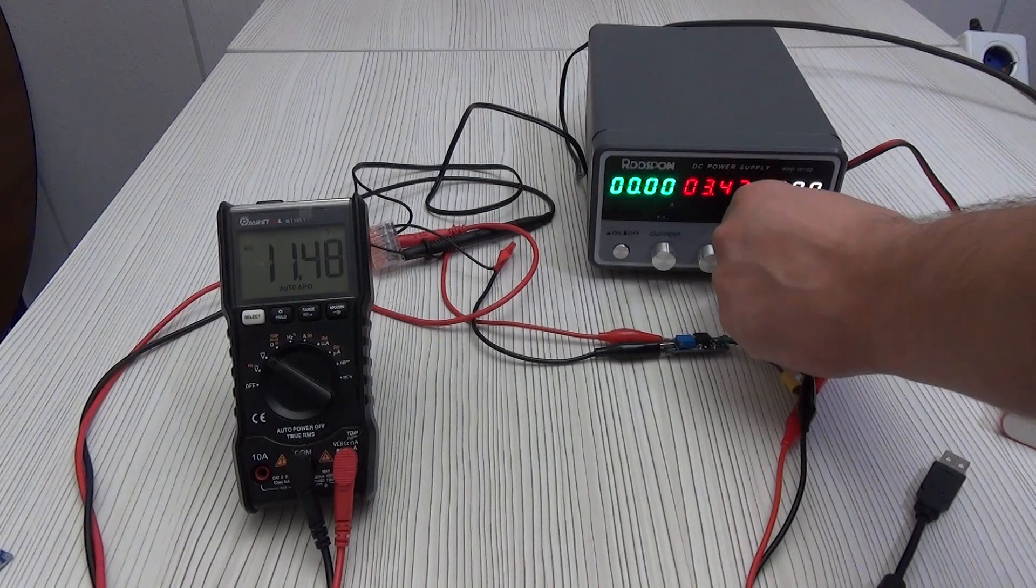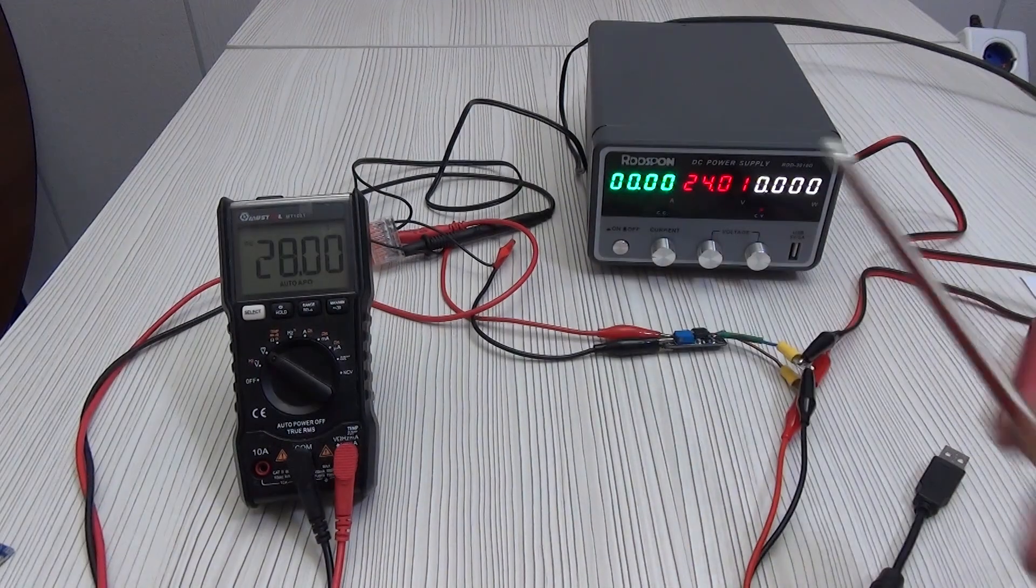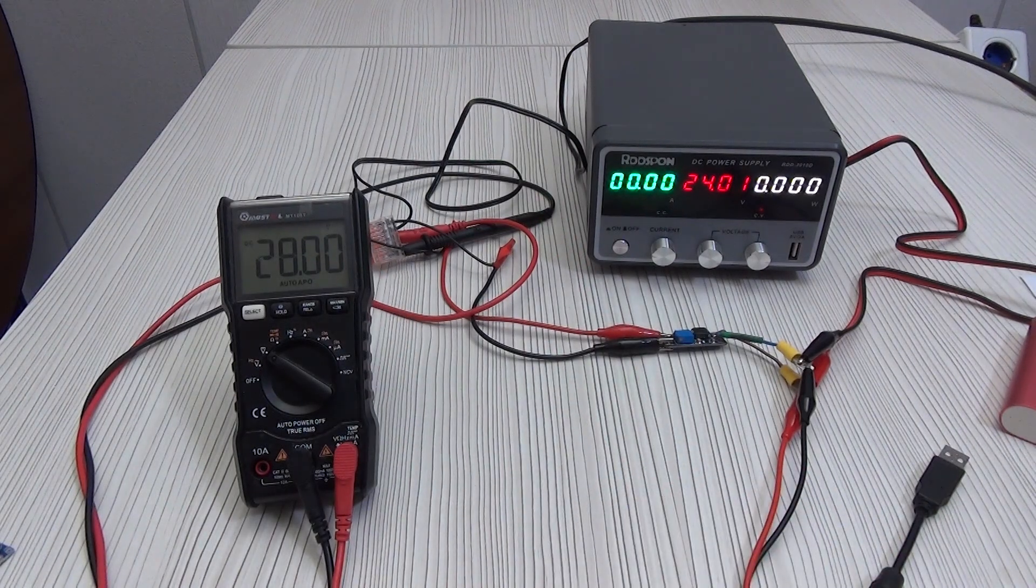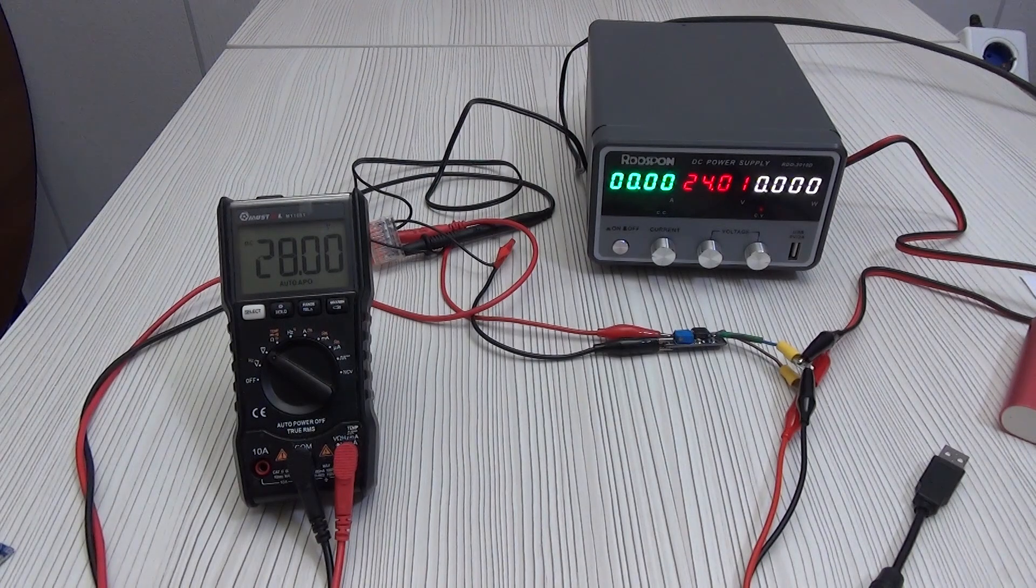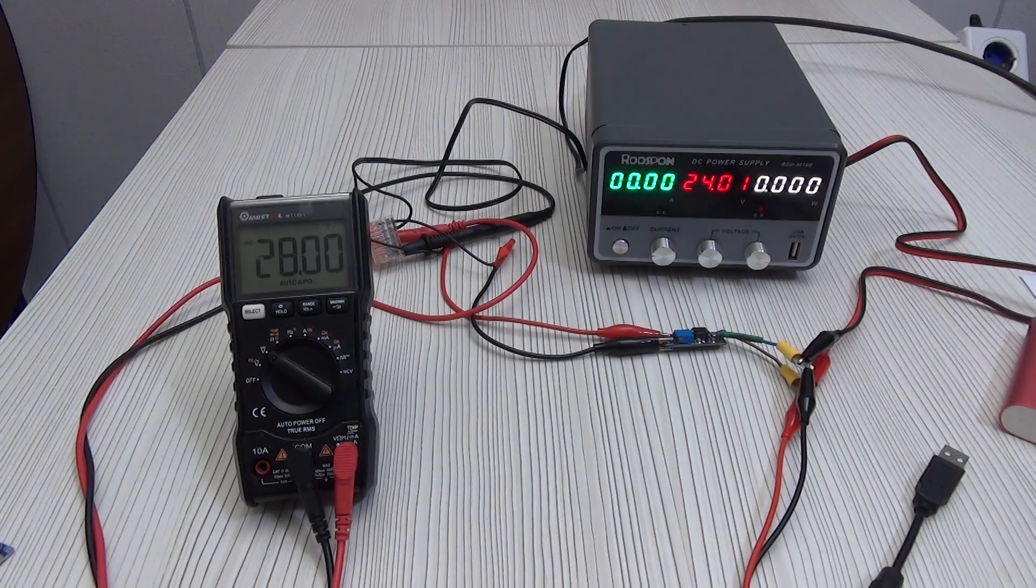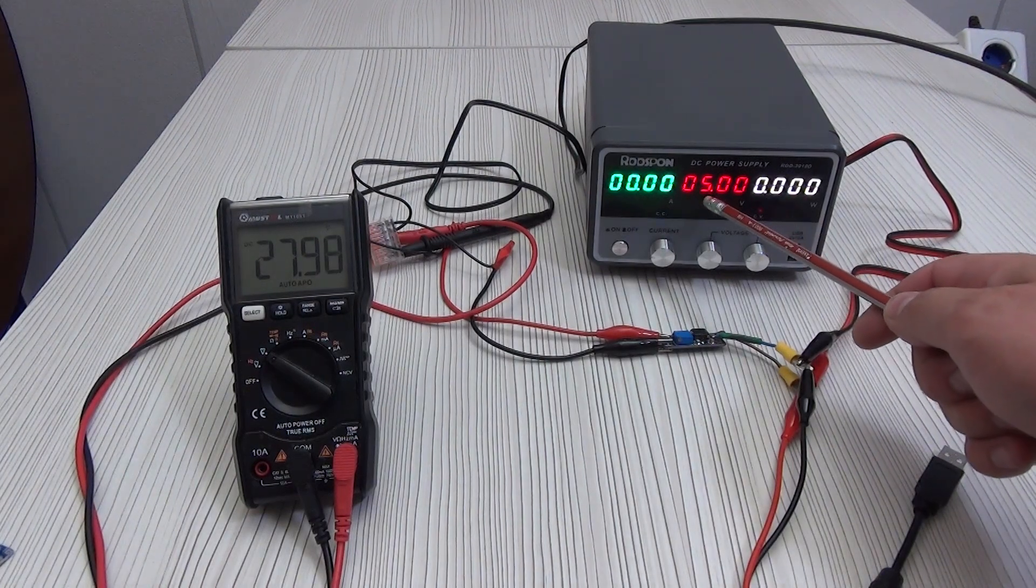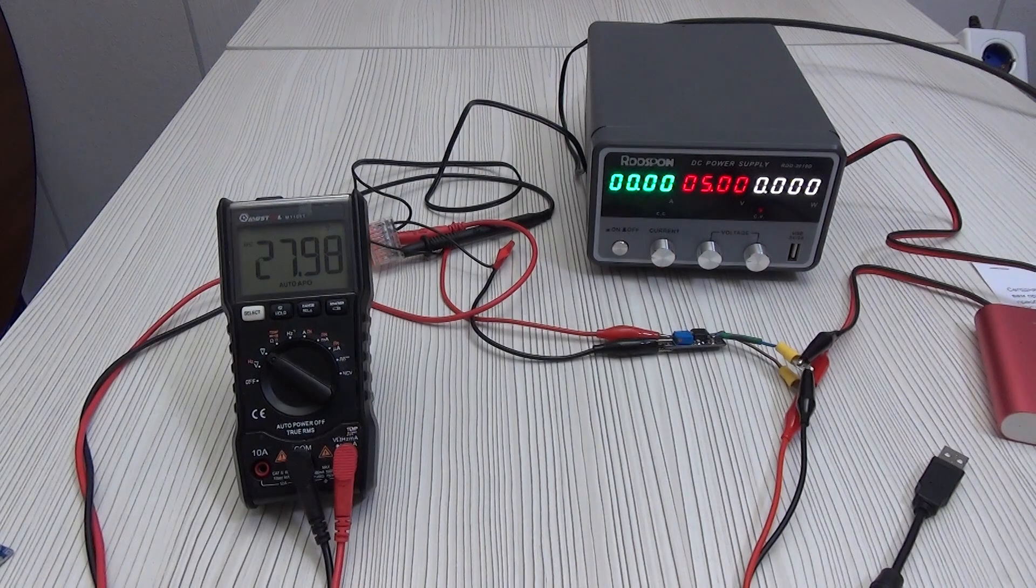The maximum input voltage is 24 volts. In this case, the output will be a maximum of 28 volts. The maximum current is 2 amperes, and it is enough for most smart home devices, routers and other equipment. Now I set the input to 5 volts, at the output we get 27.8 volts, 28 volts.